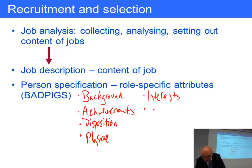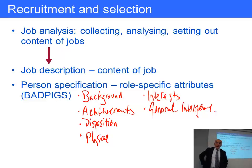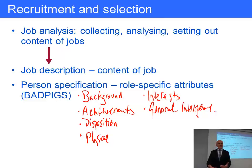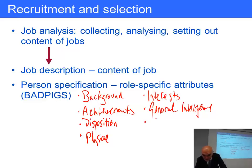G is for general intelligence. If someone comes with a degree and good qualifications you'd assume they are reasonably intelligent. But for lower-level jobs, candidates often won't have many formal qualifications, yet may need to undertake technical training. We have to make sure they are bright enough to cope with the demands of the job.